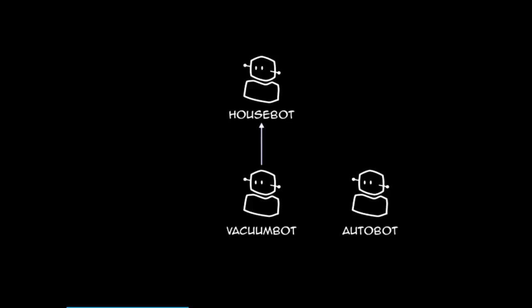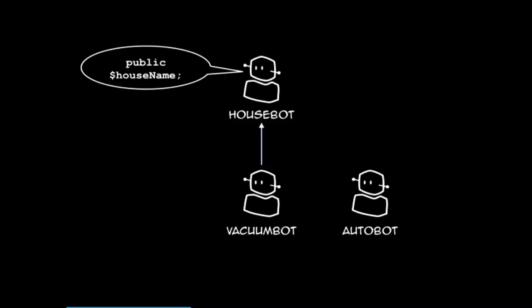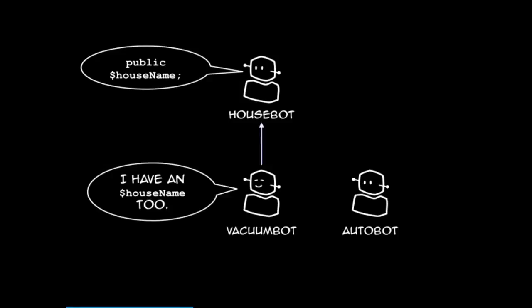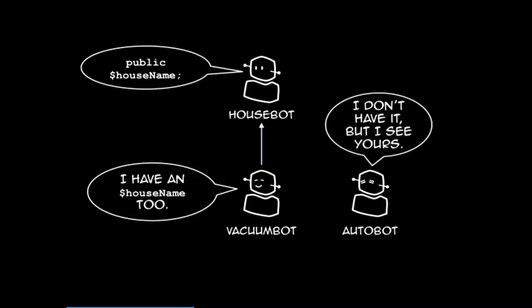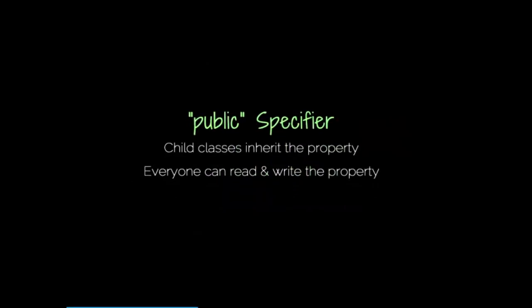What do these mean? Let's take an example of three different robots: a HouseBot, a child class called VacuumBot because it works in your house, and a completely unrelated class called AutoBot that works in the automobile manufacturing industry — because it's most certainly not referring to a cartoon. The HouseBot defines a public property called 'house_name.' VacuumBot has that same variable because it inherited it from its parent. AutoBot, not related to all of this, doesn't have that variable, but it can see theirs because it's public. That's what the public specifier does: child classes will inherit the property, and everyone can read and write it.